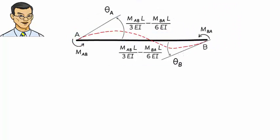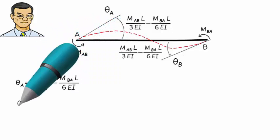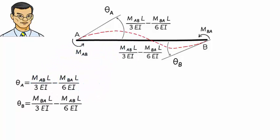Or, let's refer to this overall rotation as theta A and call this one theta B. So, we can write the two equations in terms of the member end moments and rotations. Let's treat MAB and MBA as unknowns, and write them in terms of theta A and theta B. To do so, first rearrange the equations like this.